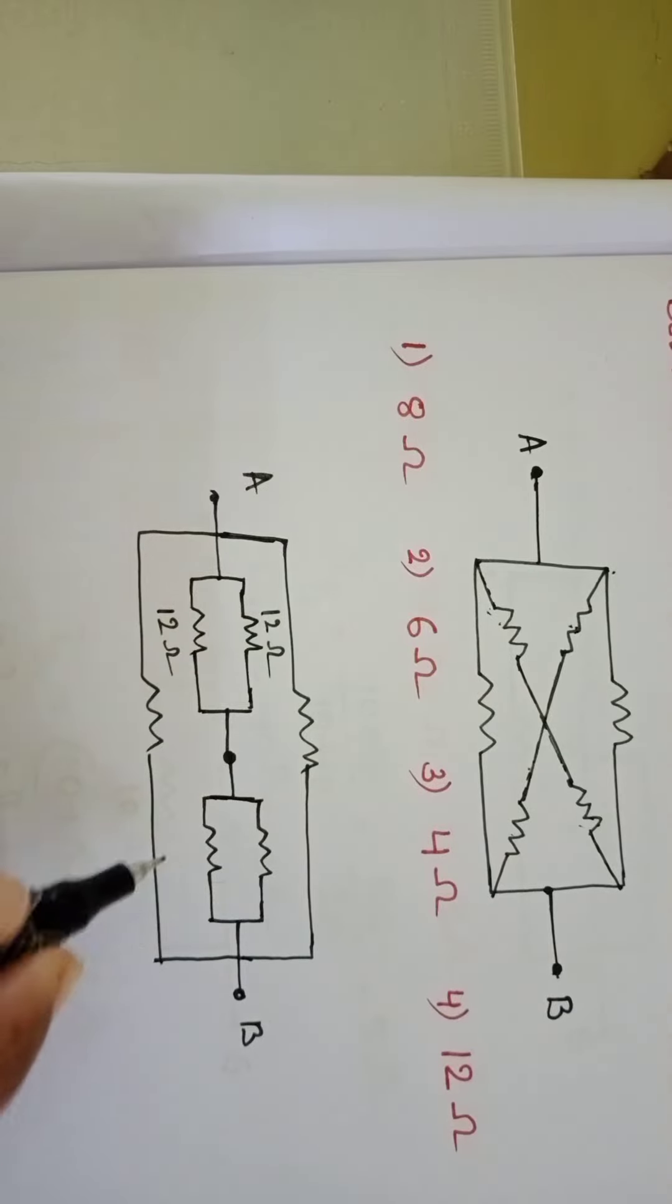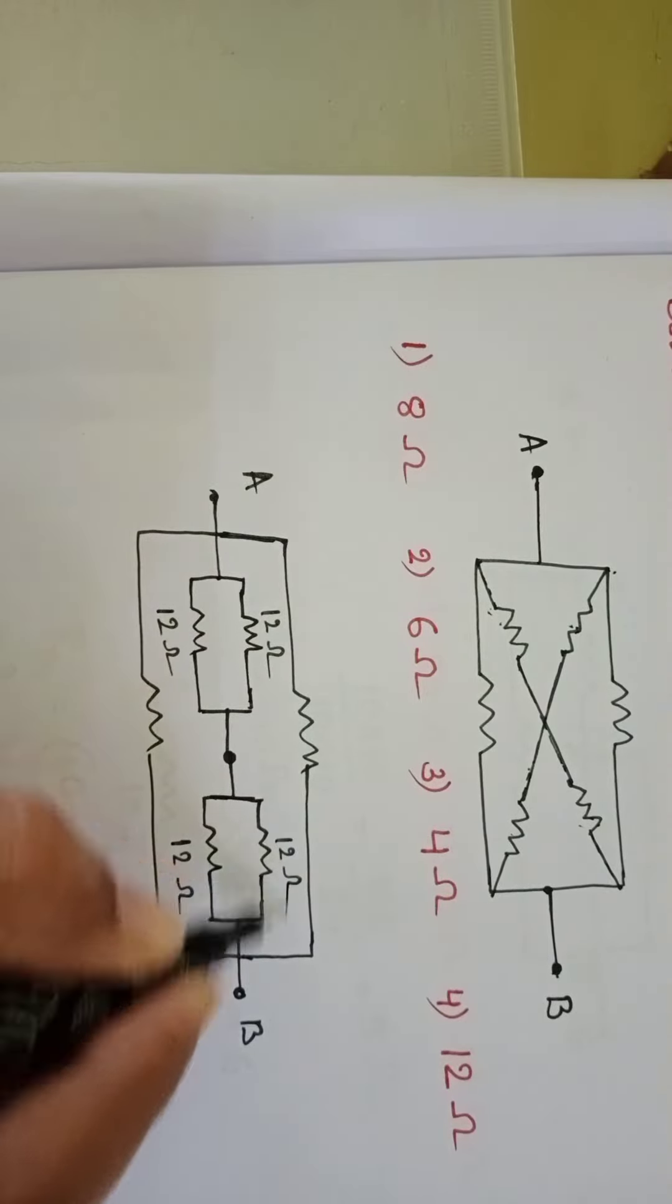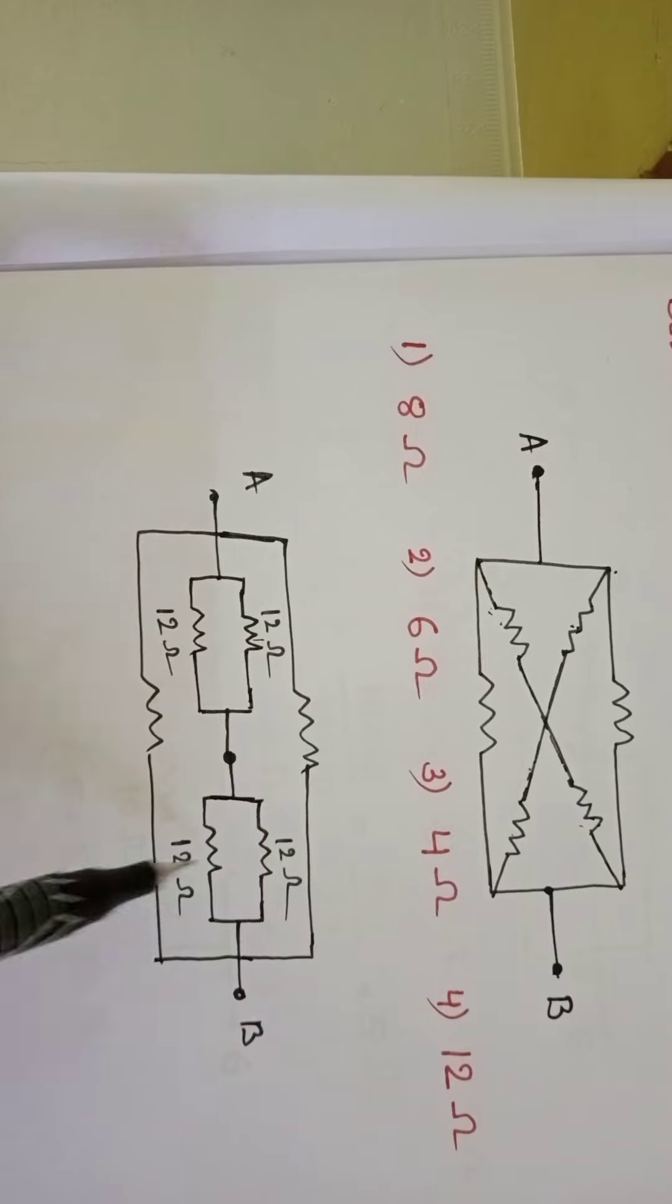12 ohm, 12 ohm, 12 ohm. So, these two resistors are in parallel to each other. Like that. 12 ohm.